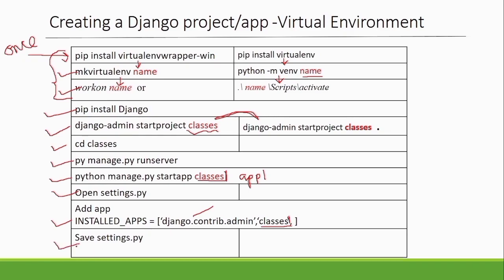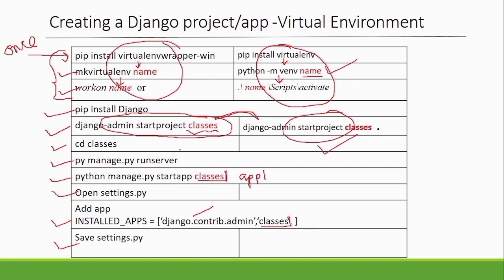Save the settings.py file. Now let's review the steps: create the virtual environment, create the Django project, install Django, create the project — either approach works. As a beginner, always check whether your server is running before creating applications, because many times mistakes in setup mean the server isn't running and you've already started creating apps. Then create your application, register it in settings.py so Django knows it exists.